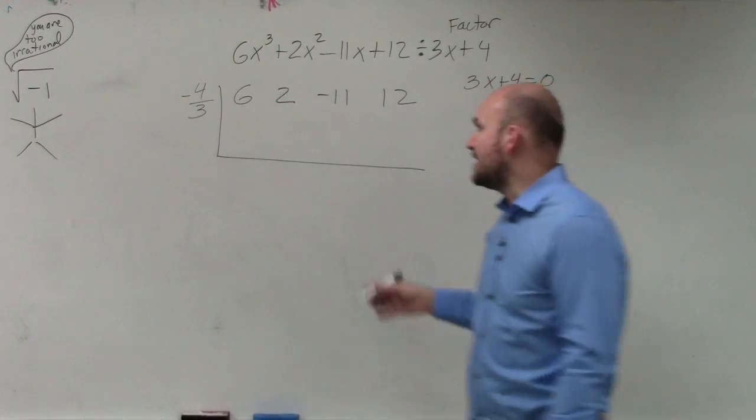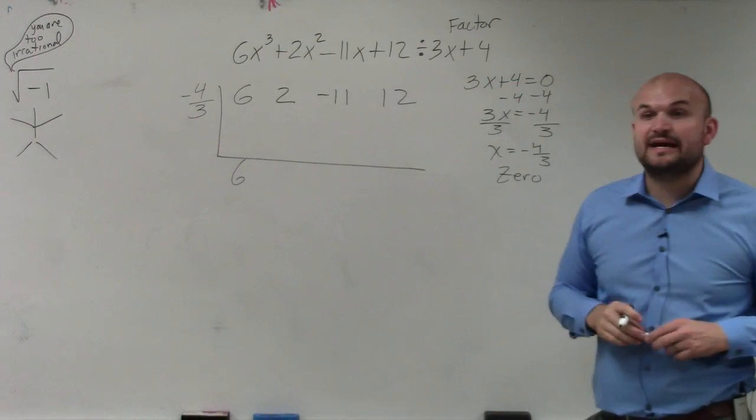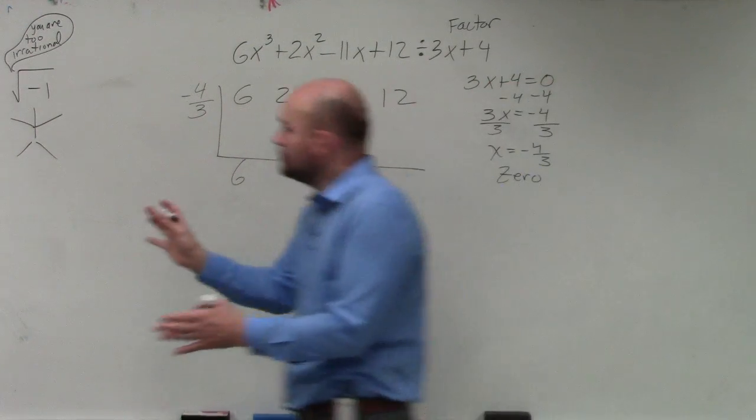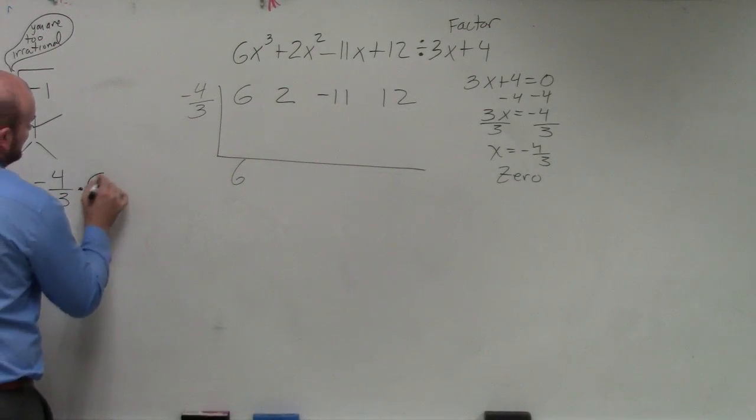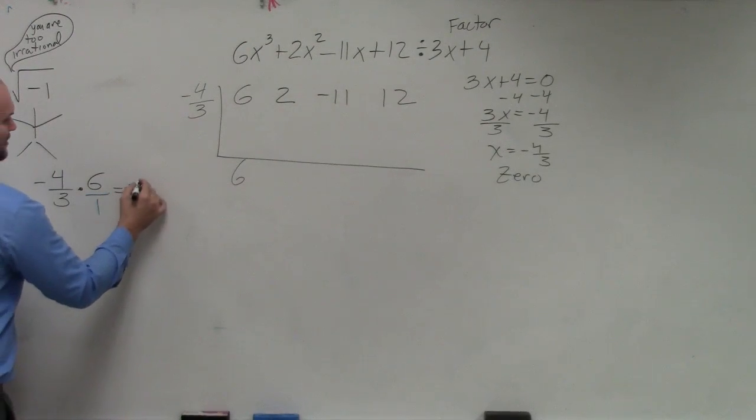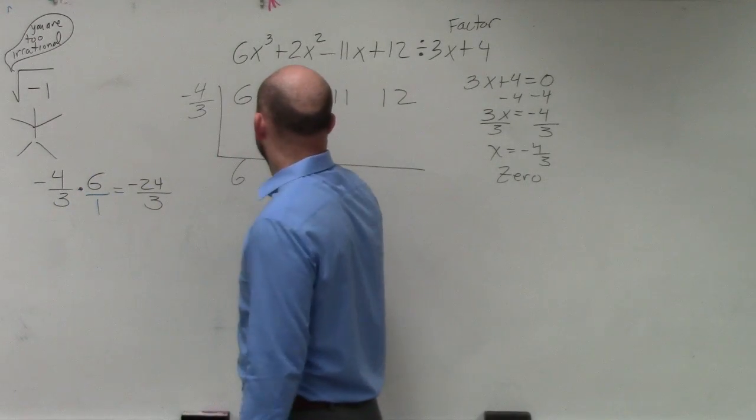Remember, first term you always bring down, which is 6. Then I do 6 times negative 4 thirds. If you're having problems with fractions, just do it off to the side: negative 4 thirds times 6. To multiply a fraction times a whole number, I like to rewrite it as a fraction. When you multiply fractions, you multiply straight across: negative 24 over 3. Negative 24 over 3 leaves you with negative 8.